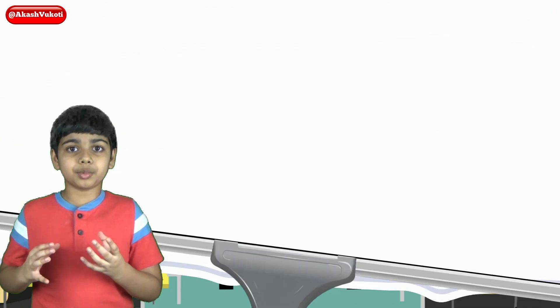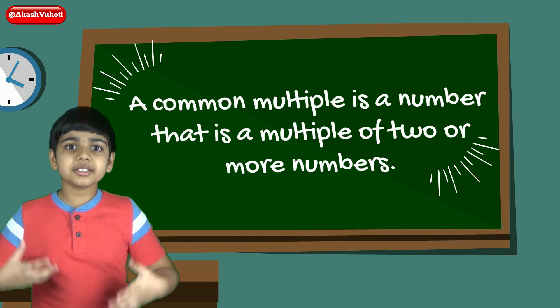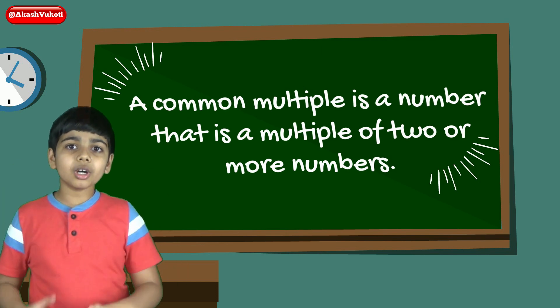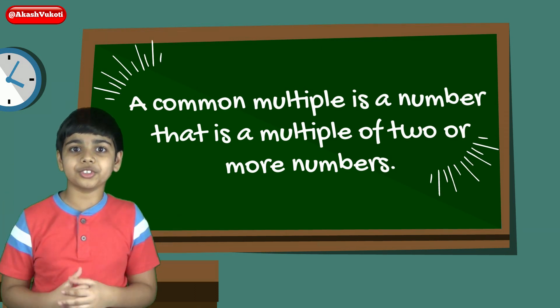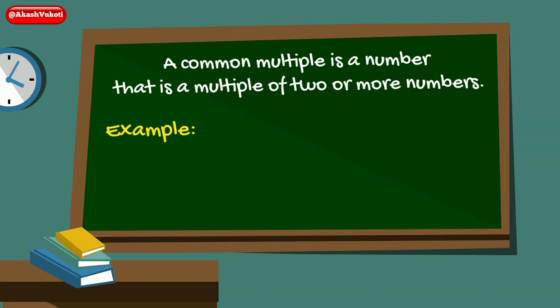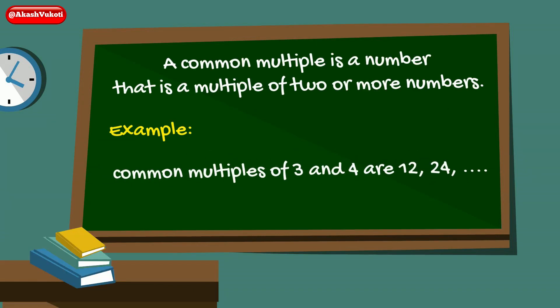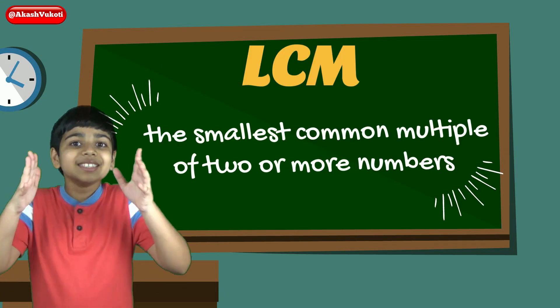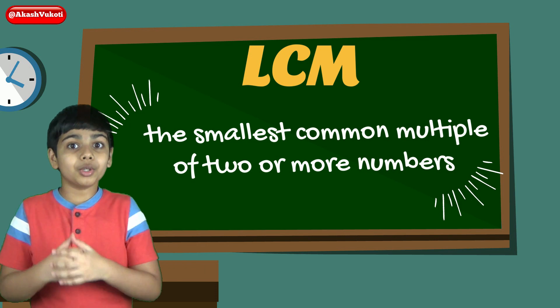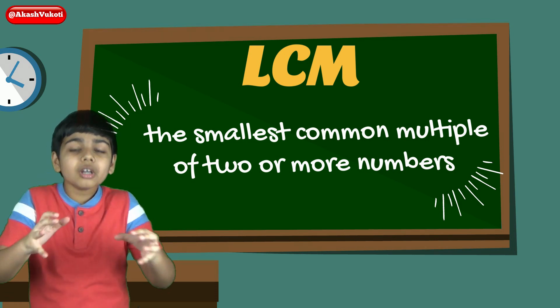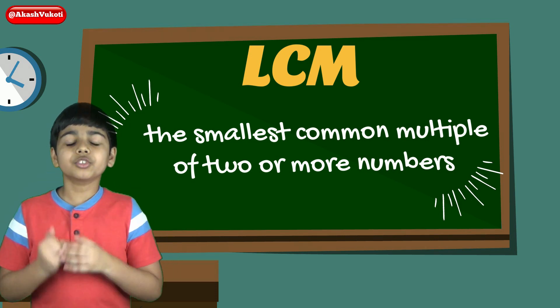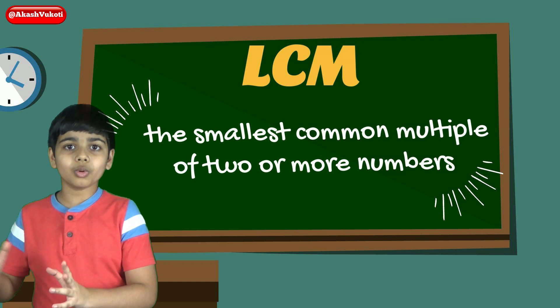A common multiple is a number that is a multiple of two or more numbers. For example, the common multiples of 3 and 4 are 12, 24, and so on. Now, the least common multiple is the smallest common multiple of two or more numbers.